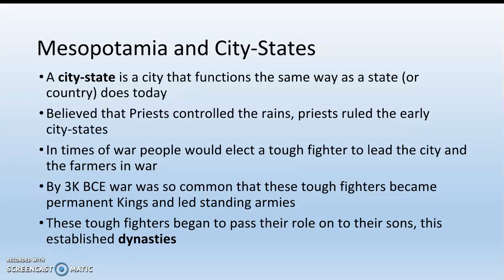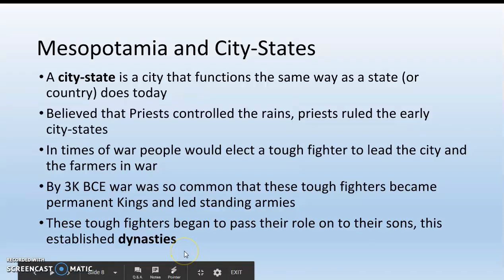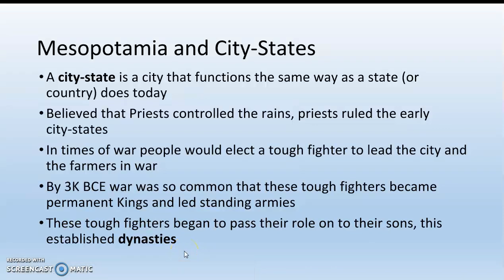These tough fighters — these new kings — begin to pass their role as king onto their eldest sons, establishing the very first dynasties. A dynasty is when the eldest son becomes the next king, and his eldest son becomes the next king after that — passing down political power to their children. Dynasty is probably the most important vocab term in Unit 1, because dynasties in the form of monarchies, absolute monarchies, and constitutional monarchies are going to be the go-to political system for most of the world for most of human history.